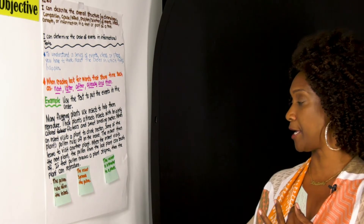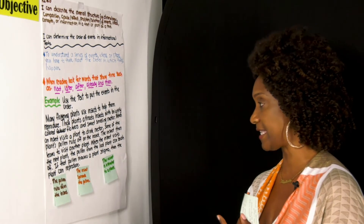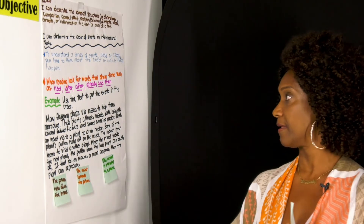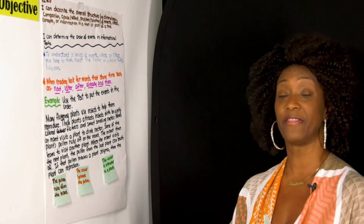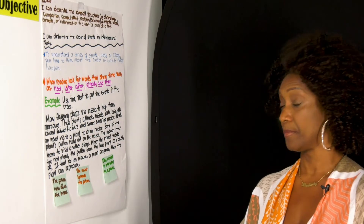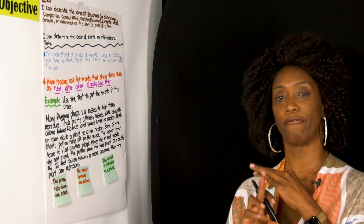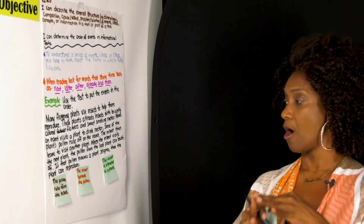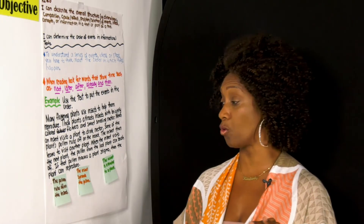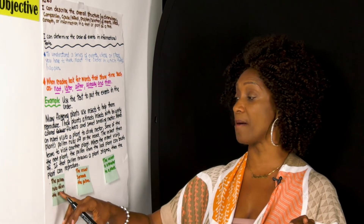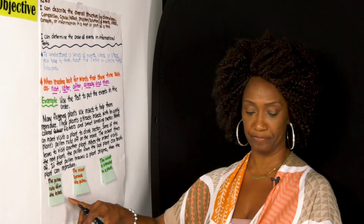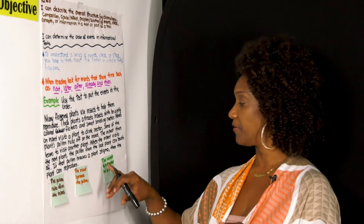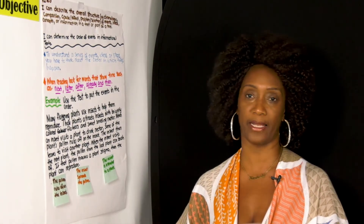What's happening here with the insects? First, next, and then — those are some of your buzzwords for sequencing: first, next, and then. So we're going to arrange these in order. I have: the pollen rubs off the insect, the insect spreads the pollen, the insect is attracted to the pollen.